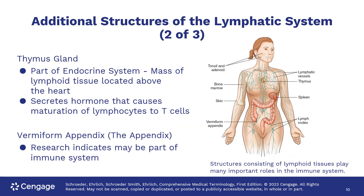The thymus gland is lymph tissue located above the heart that secretes a hormone that allows the lymphocytes to become T cells. The appendix is thought to be part of the immune system.